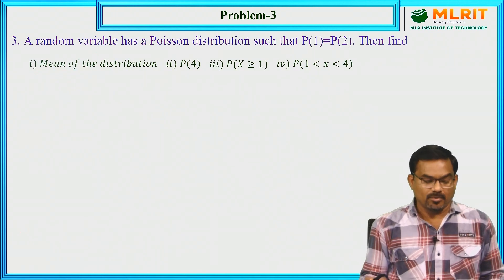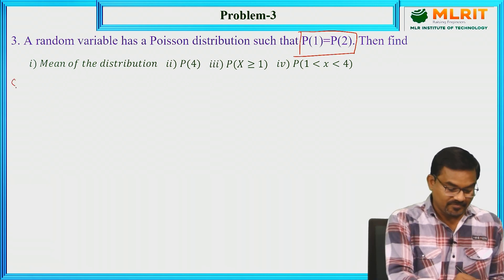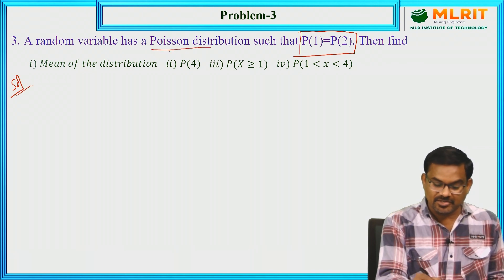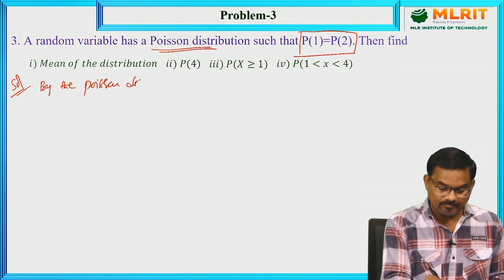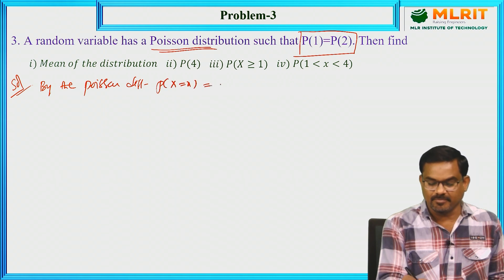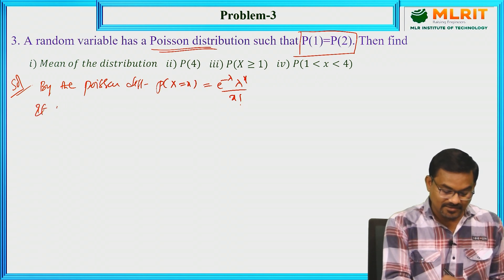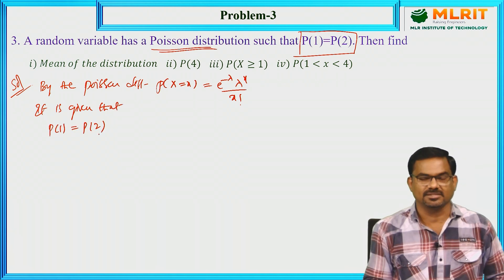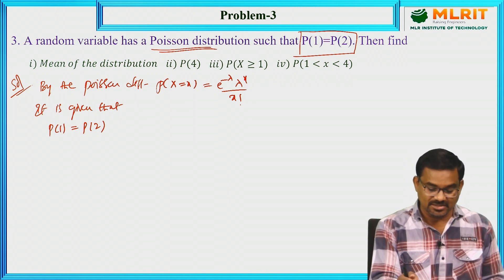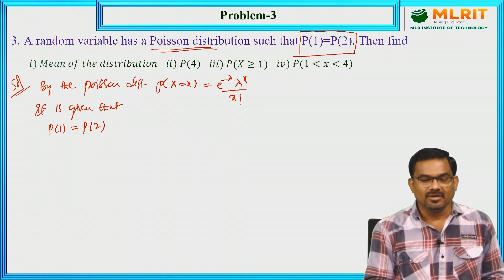Another problem: a random variable has a Poisson distribution such that P(1) = P(2). It is clearly mentioned as Poisson distribution. By Poisson Distribution, the probability of x successes is e^(−λ) · λ^x / x!. It is given that the probability of 1 success equals the probability of 2 successes. Using this, we can calculate the value of λ from the given relation.